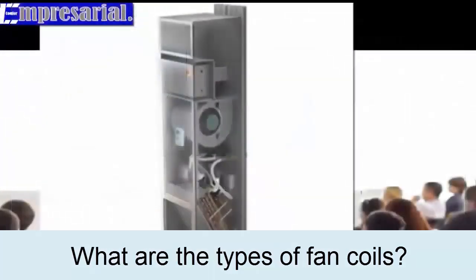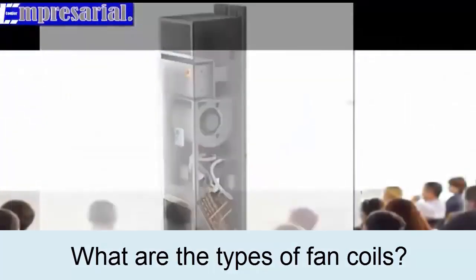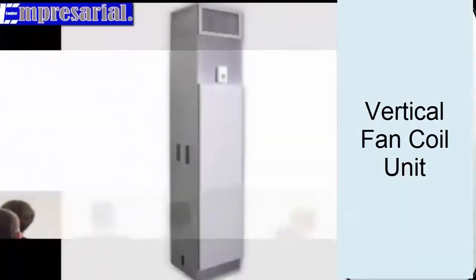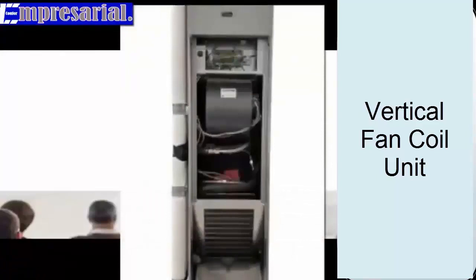1. Vertical fan coil: The vertical units are manufactured to be installed on the perimeter walls of the area to be heated. They are usually embedded and covered by some type of decorative furniture designed specifically for the unit.